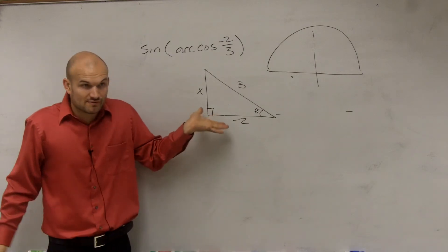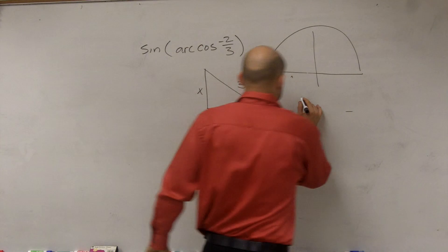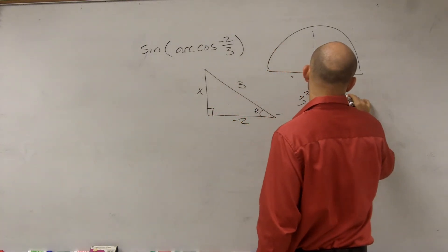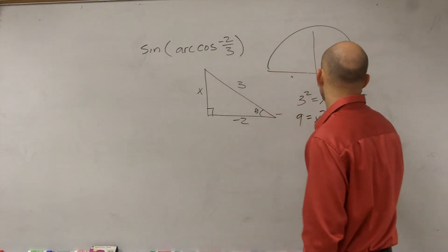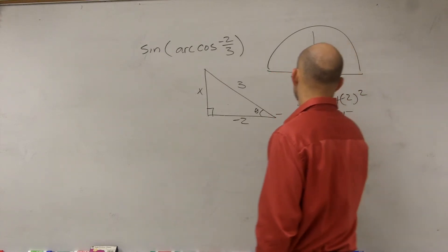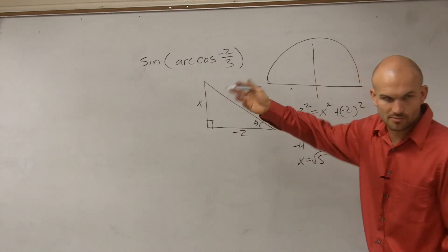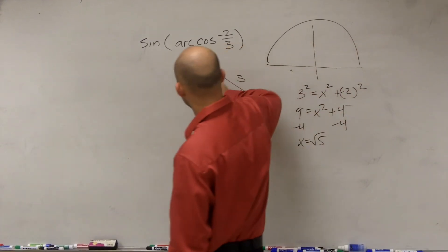So now, ladies and gentlemen, once we have a triangle, we have two sides. We have to use the Pythagorean theorem to find our third side. So we do 3 squared equals your leg squared plus your other leg squared. So we have 9 equals x squared plus 4. Subtract 4. x equals the square root of 5. Take the square root of both sides. So therefore, we have x equals the square root of 5.